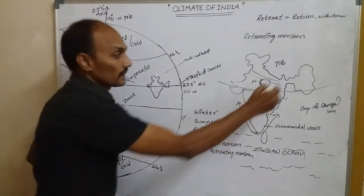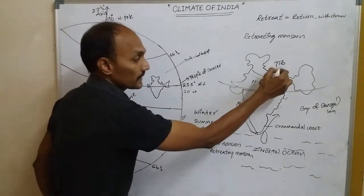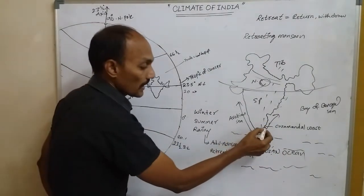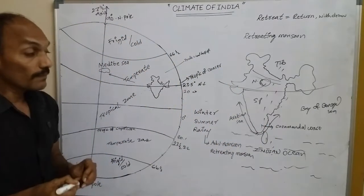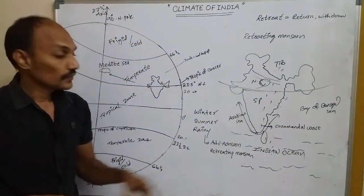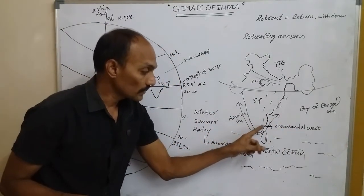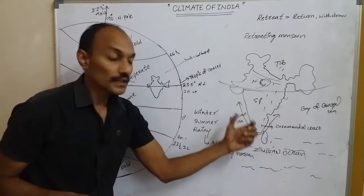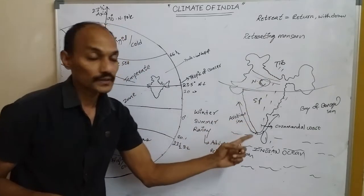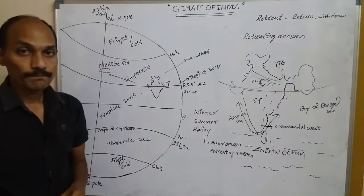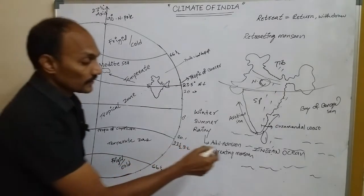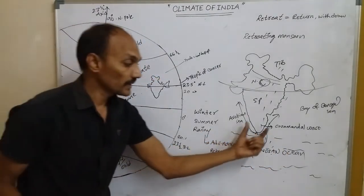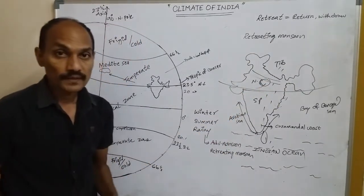While the retreating monsoon travels over India, Tamil Nadu state receives some amount of rainfall, especially along the Coromandel Coast. The Tamil Nadu coast is called the Coromandel Coast, and it receives rainfall due to the northeast monsoon. Cyclones and floods are also seen in Tamil Nadu in October and November due to the retreating monsoon.